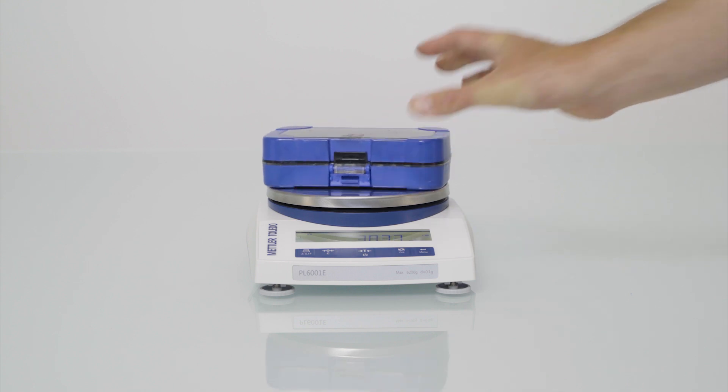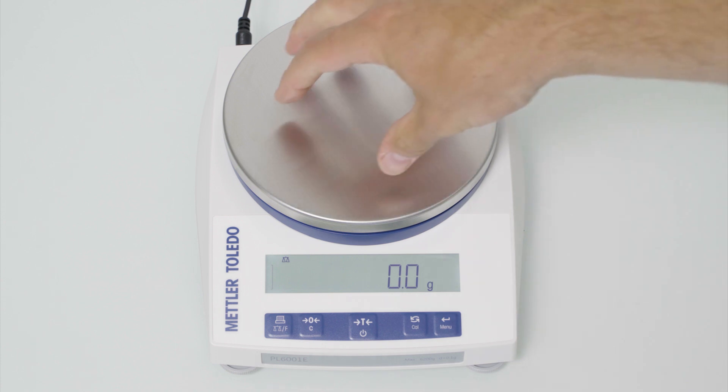The PLE offers a large weighing pan made from stainless steel which makes weighing of larger objects convenient. It also has an overload protection to help ensure a long balance life even under sub-optimal conditions.